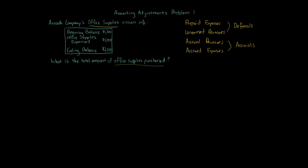Office supplies is an asset account. Assets are current or future resources to be used by the business — they convert into expenses. If you buy a million sheets of paper for printing, when you buy that, it is a current or future resource your company can use: print out receipts, papers, information needed.